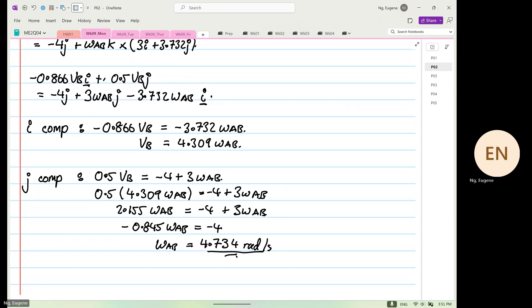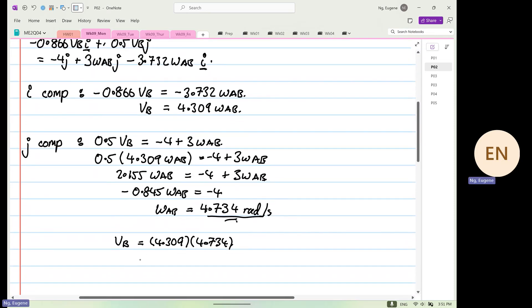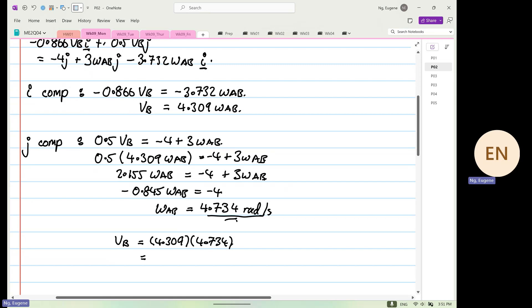Now at the same time, we can calculate VB. So you can get 4.309 multiplied by 4.734. So this will be equal to 4.309 times 4.734 is equal to 20.399 or 20.4 feet per second.